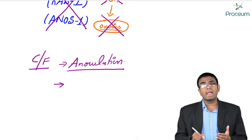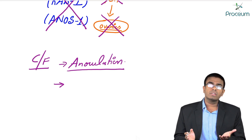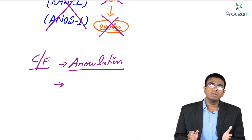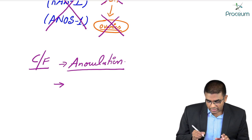Will she have normal periods? No — because without gonadotropin hormones, the ovaries are not stimulated. If the ovaries are not stimulated, there is no release of estrogens. If there is no estrogen, the uterine endometrium will not proliferate, so menses cannot occur. This female will have amenorrhea.